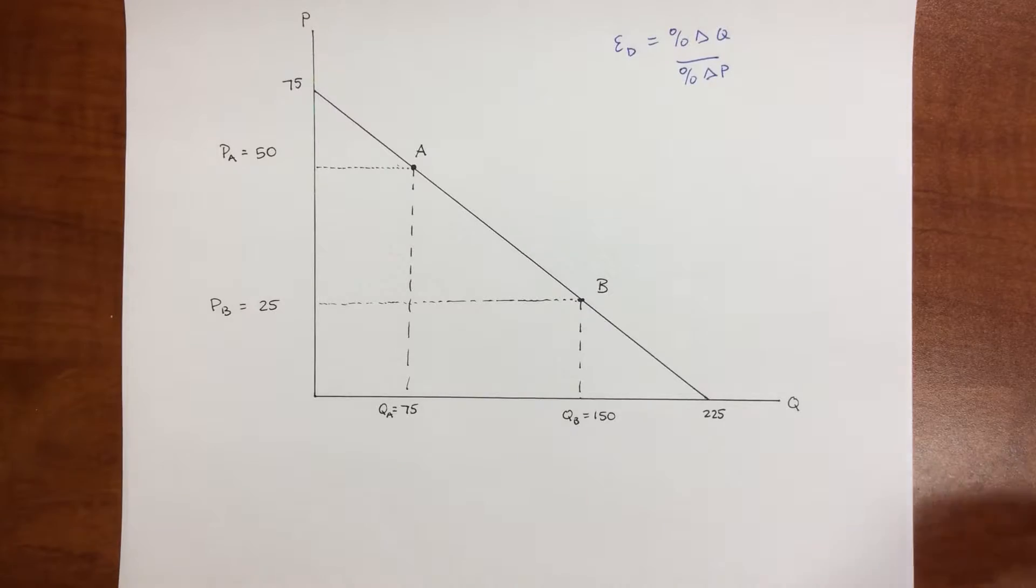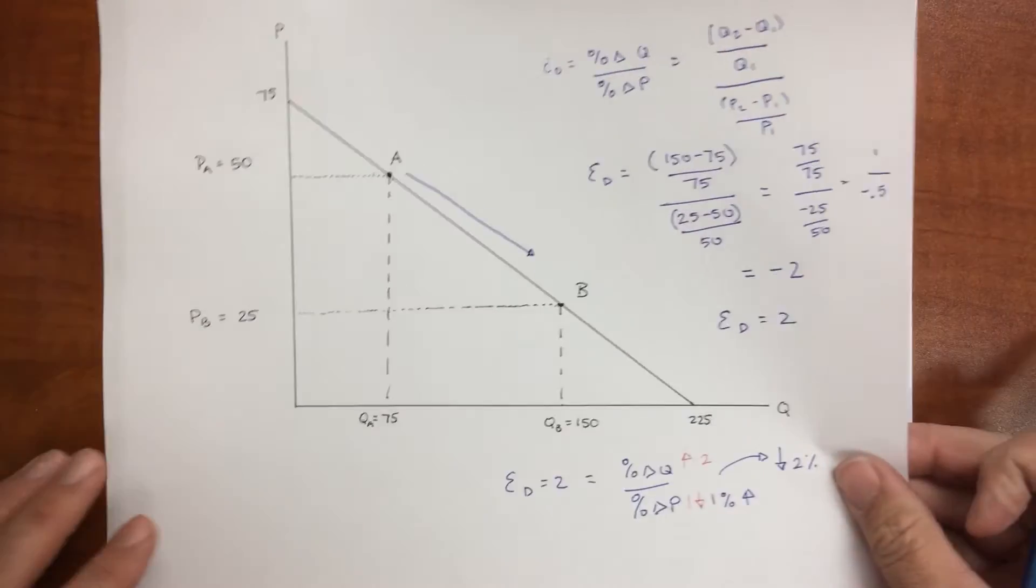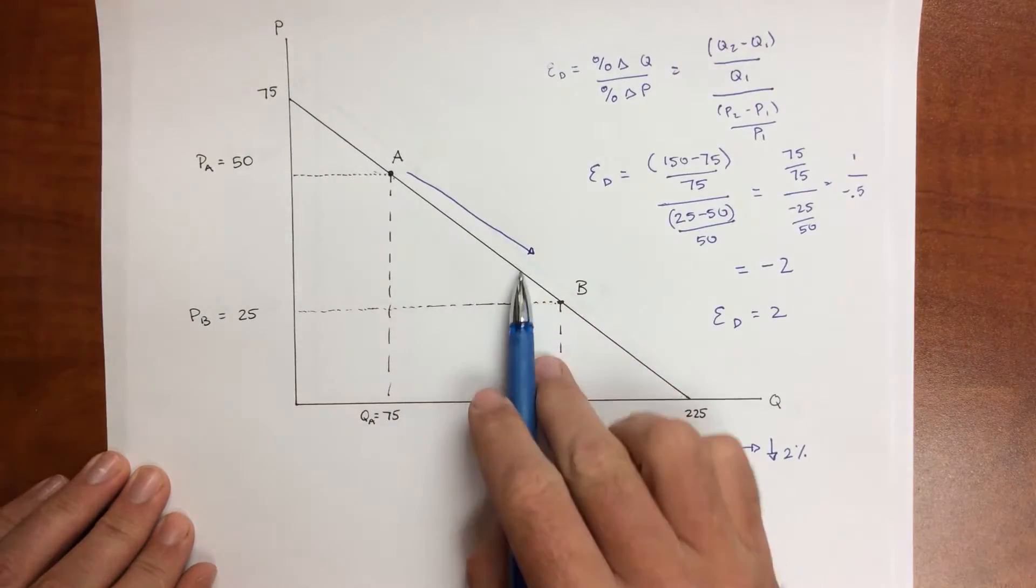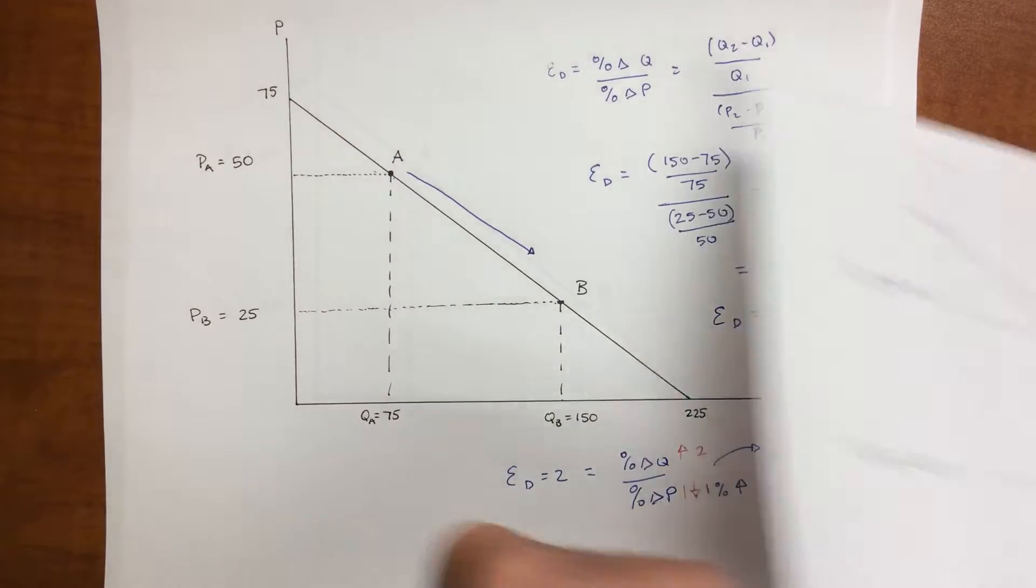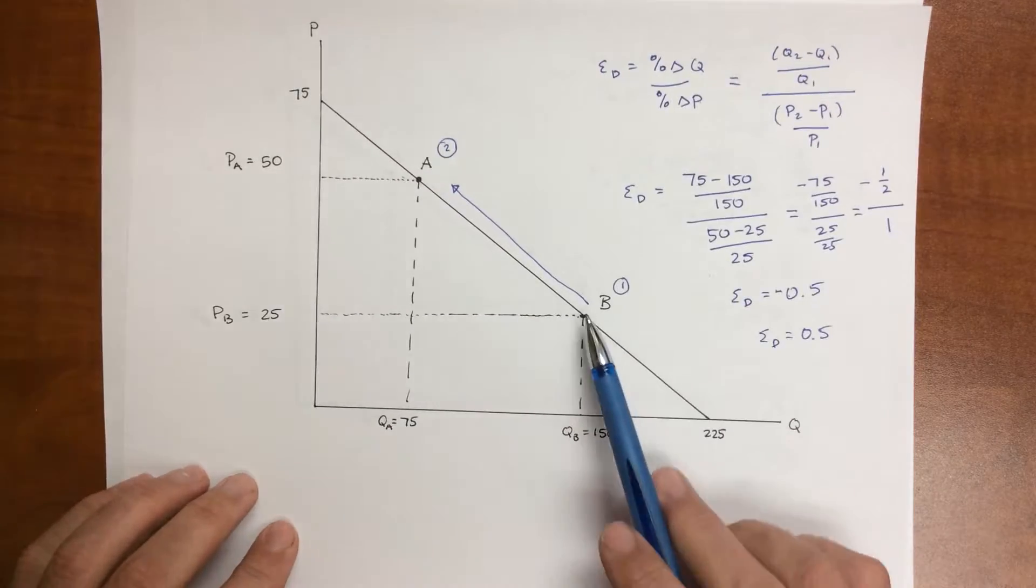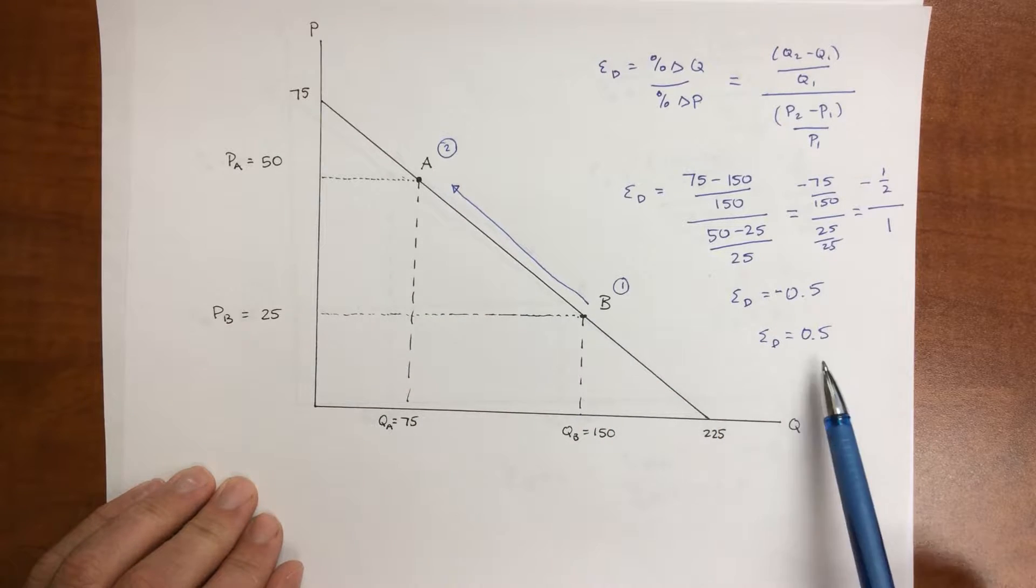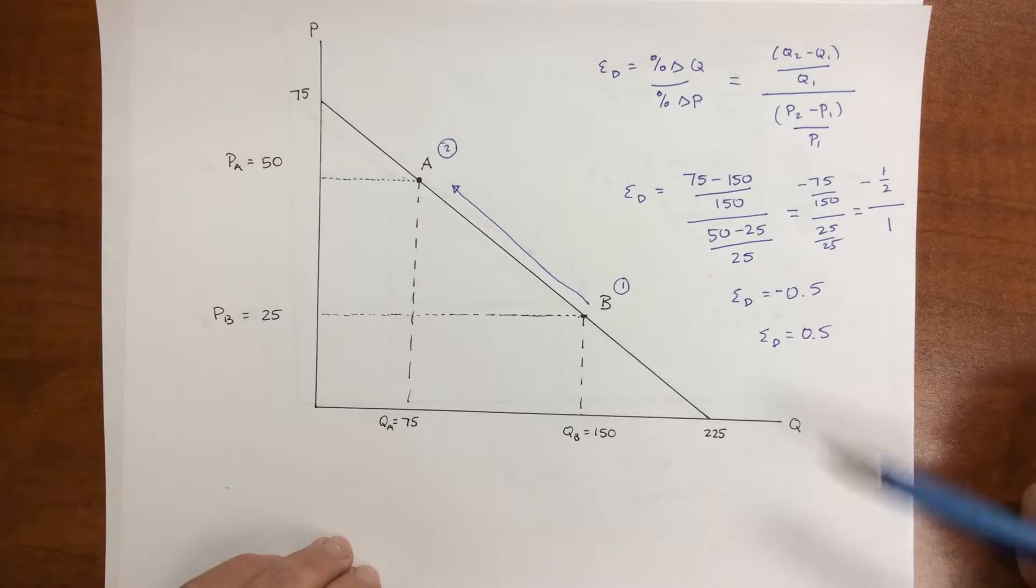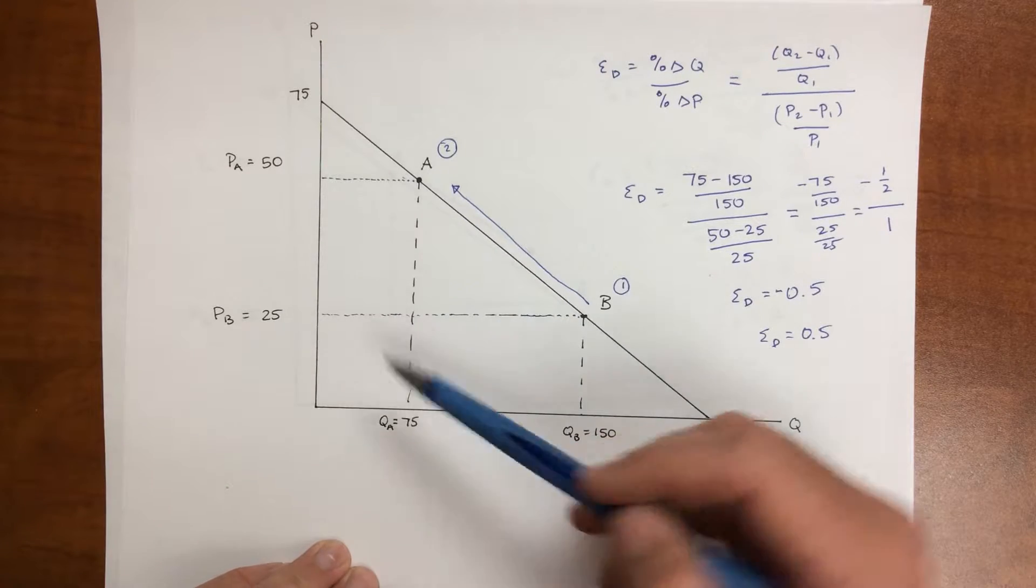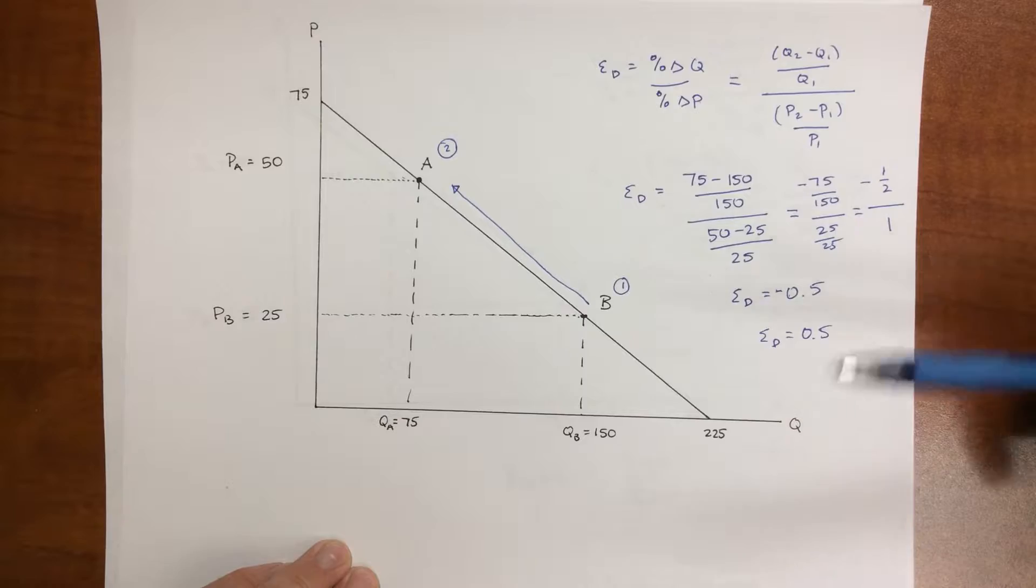What we showed in previous examples is that if I go from point A to point B, my elasticity of demand is 2. But if I go from point B to point A, now my elasticity of demand is 0.5 or 1.5. And so some might argue that going from A to B to B to A should not depend, should not be different.